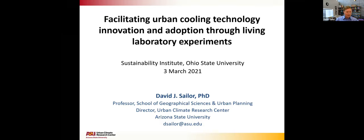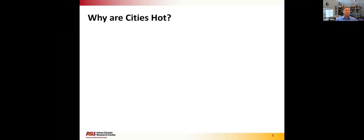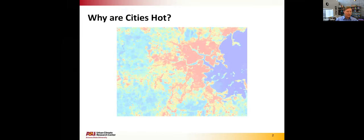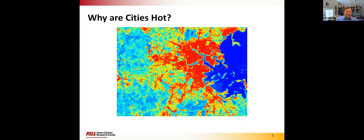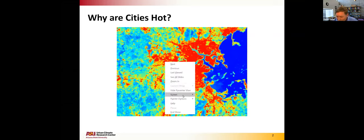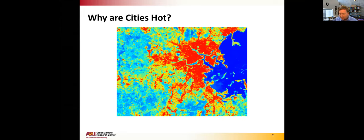Let me tell you a little about the motivation for why we're doing this. Cities are hot. If you look at satellite remote-sensed imagery of surface temperatures — this happens to be Boston, you can actually see Logan Airport jetting out into the bay — there is a very strong thermal signature of just about any city. With surface temperatures being as hot as they are, you might expect that there are also air temperature elevations that are of interest and concern.